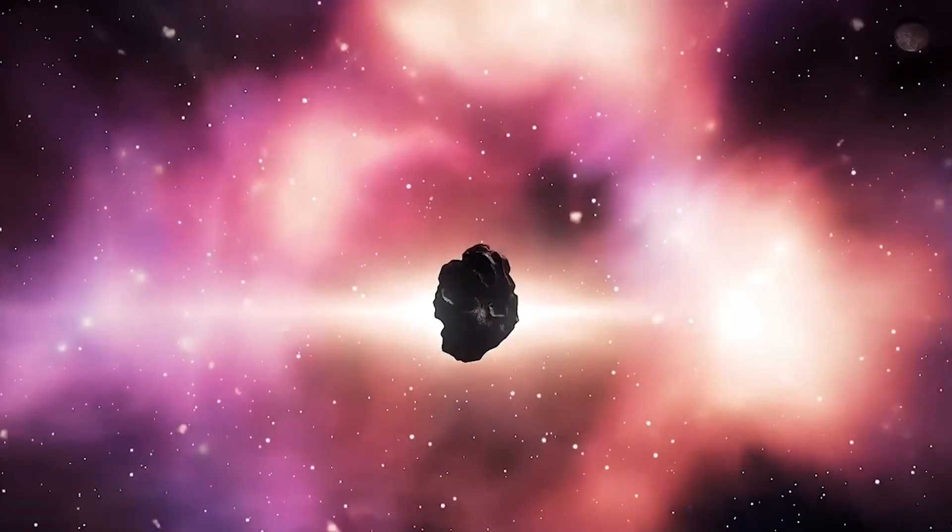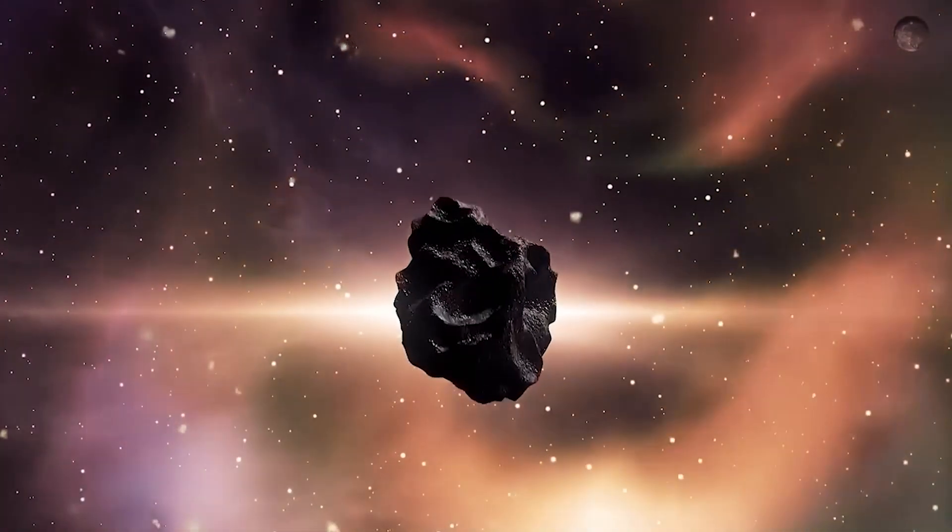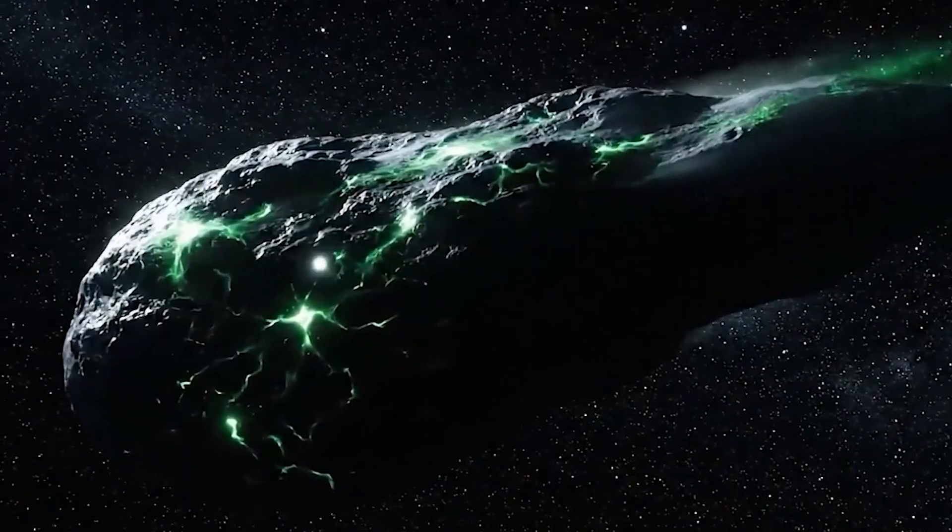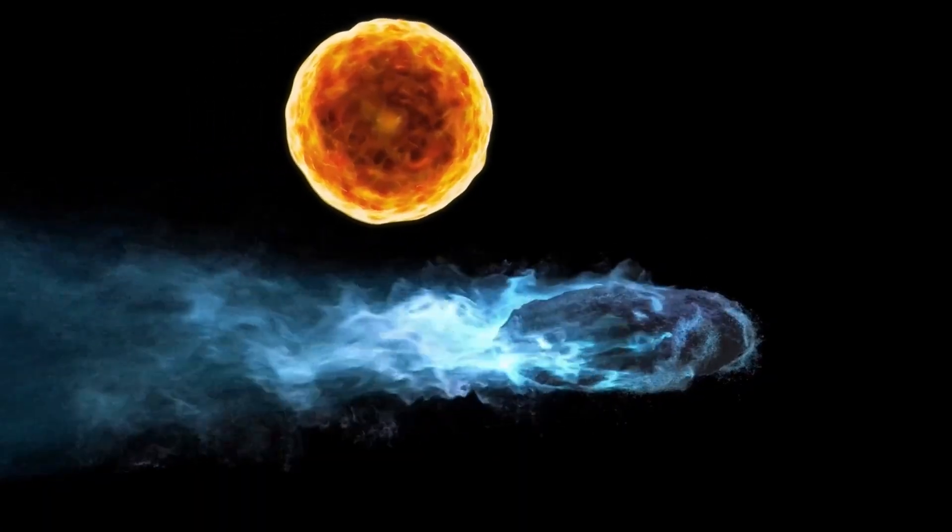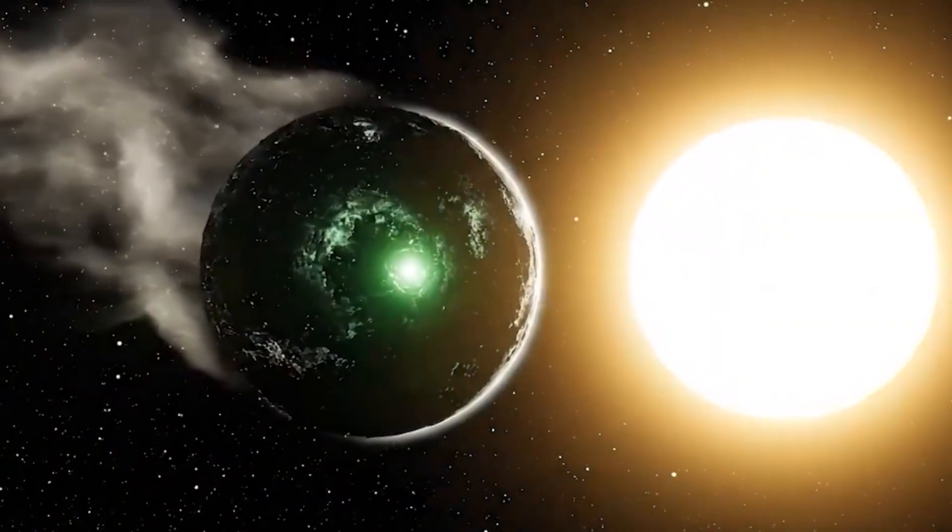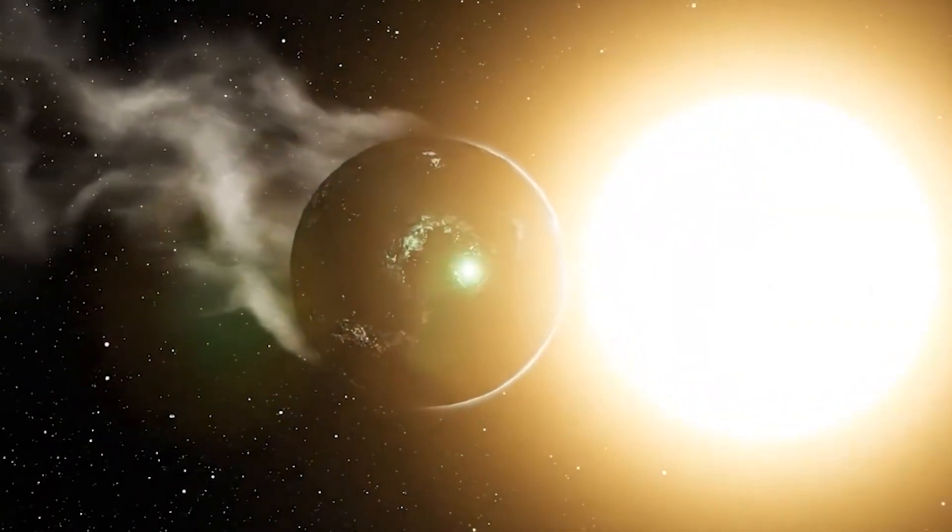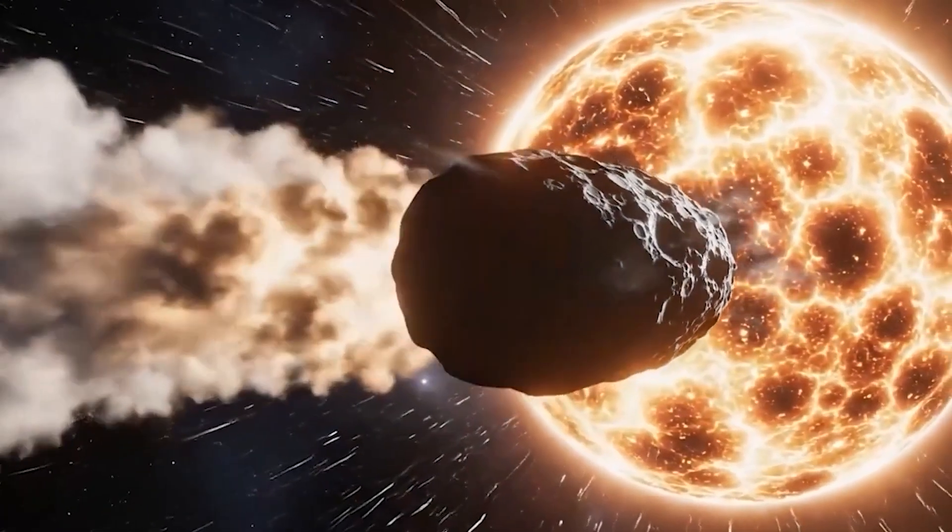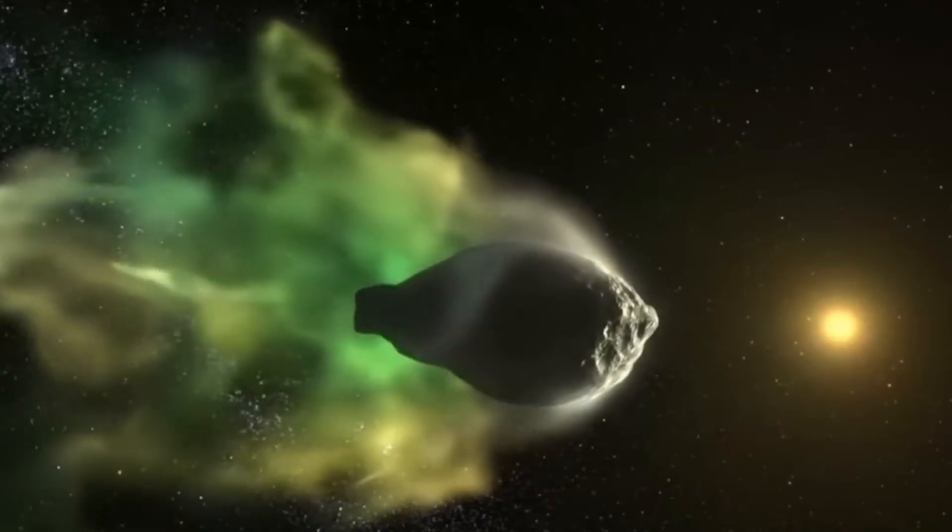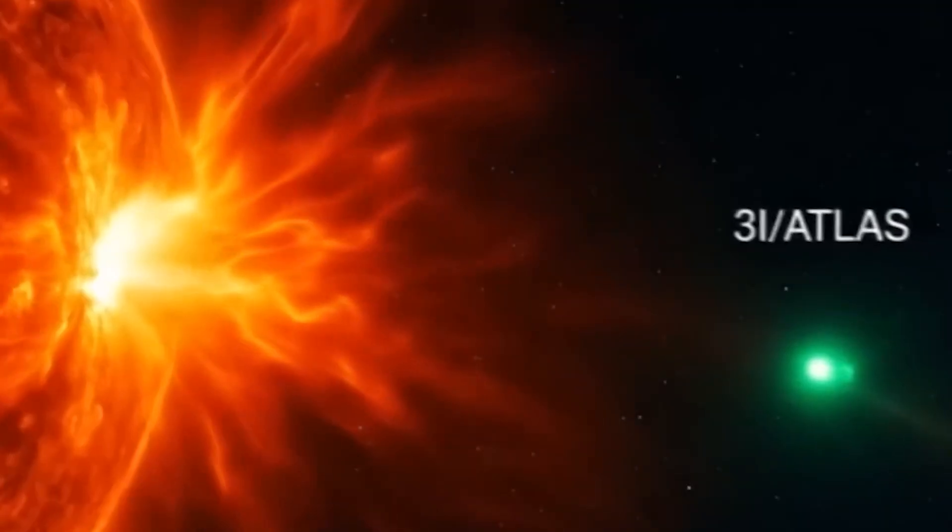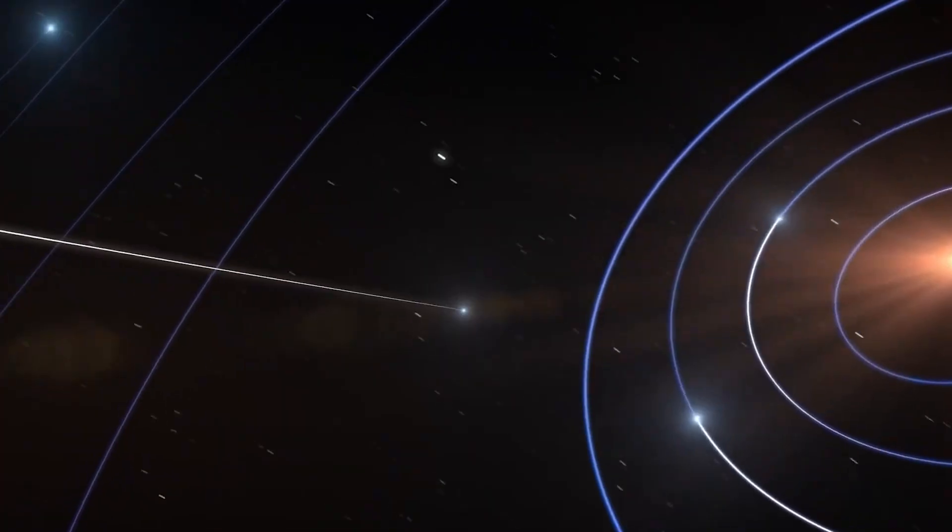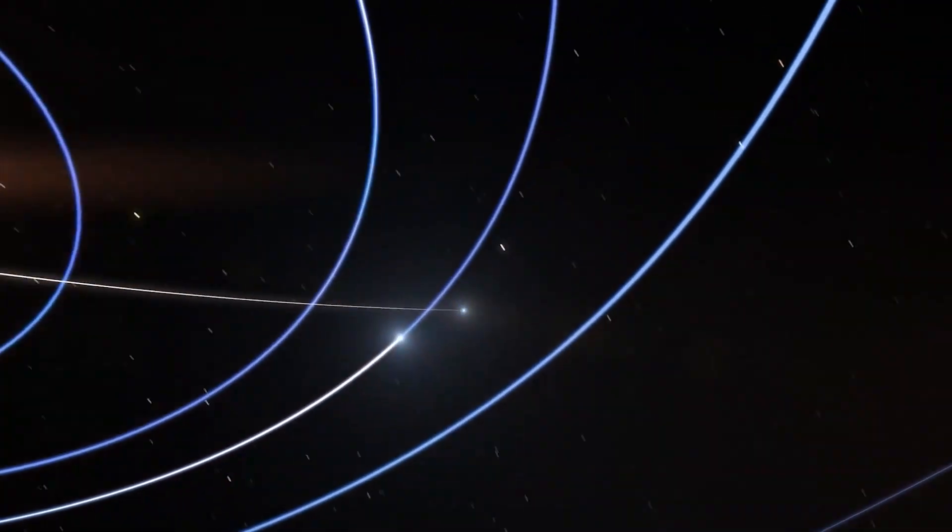And this is important because 3i Atlas has been behaving in some very unusual ways. We've talked about this in previous videos, but just to recap, this object has done things that no normal comet would do. It started glowing incredibly bright way too far from the Sun. It developed an anti-tail that pointed toward the Sun instead of away from it. It released massive amounts of carbon dioxide instead of water vapor. It had nickel in its coma without any iron, which doesn't make sense because those two metals are always found together in nature. And then when it passed close to the Sun during perihelion, it accelerated in a way that suggests some kind of propulsion system. It changed direction by over 200 kilometers per day, which is way more than any normal comet should be capable of.